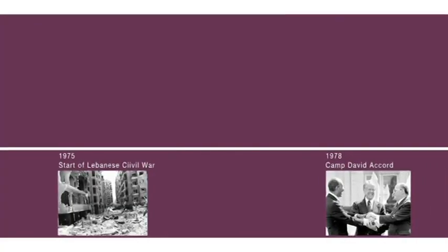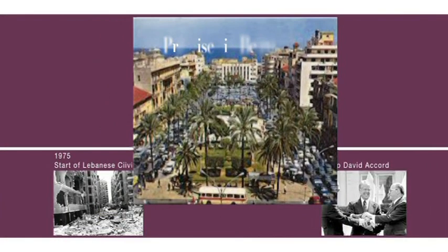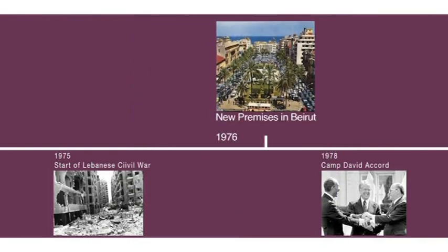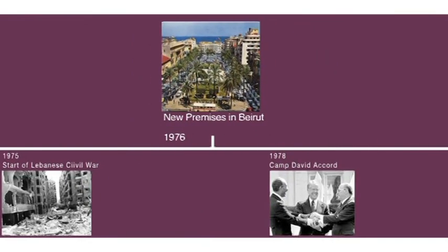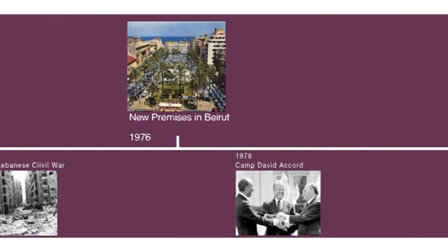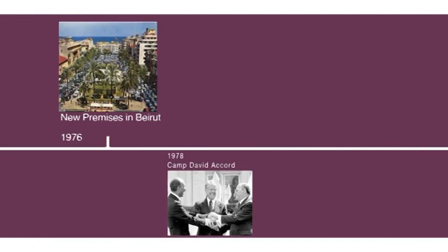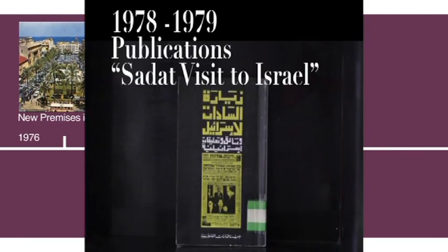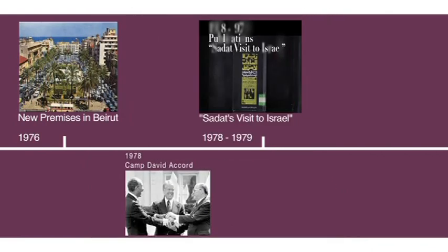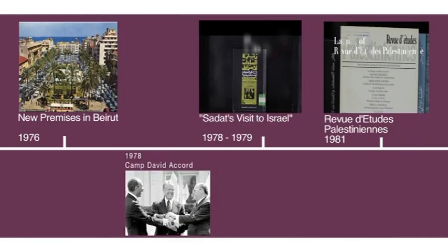Although the civil war was raging in Lebanon, IPS continued to develop and grow in size, acquiring new premises, increasing the number and breadth of its publications, even launching new initiatives like the Revue d'Études Palestiniennes, which was published from Paris.